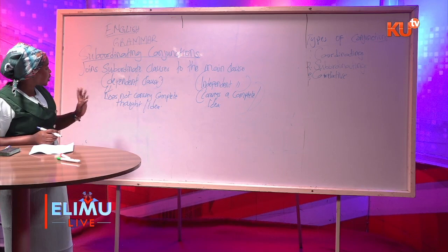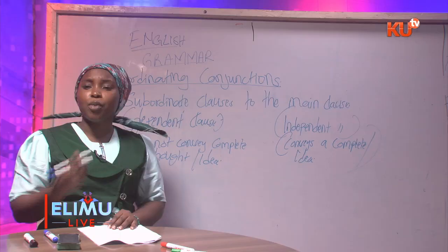Subordinating conjunctions are always followed by a clause. And there are quite many of them.